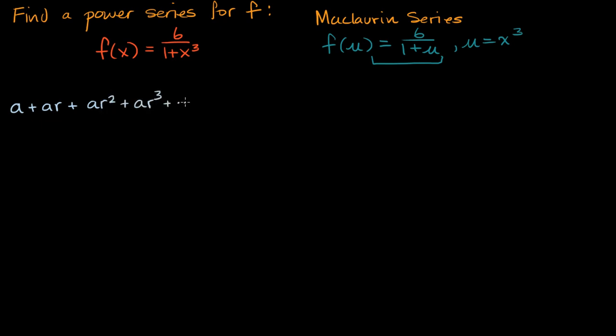and I keep going on and on forever, we know that this is going to be equal to a/(1-r), our first term over one minus our common ratio, and this just comes from the sum of a geometric series. And notice that what we have here for f(x), our definition of f(x), and the sum of a geometric series look very similar.